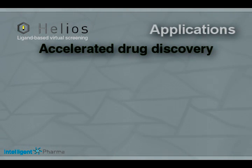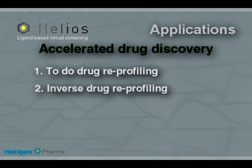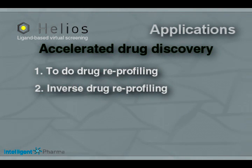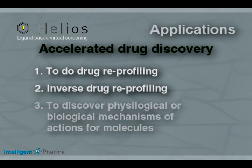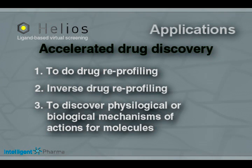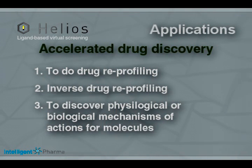For accelerated drug discovery, to do drug reprofiling, a new therapeutic application from an already approved drug is determined by checking the drug's similarity to other active compounds used in medicine. The reverse case, called inverse drug reprofiling, also applies — whereby any specific disease for which new active compounds, which already serve as a drug for other medical uses, are determined. To discover physiological or biological mechanisms of action for molecules: comparing an approved drug to molecules which bind known receptors, Helios can find new binding partners for the approved drug and therefore also new therapeutic applications.